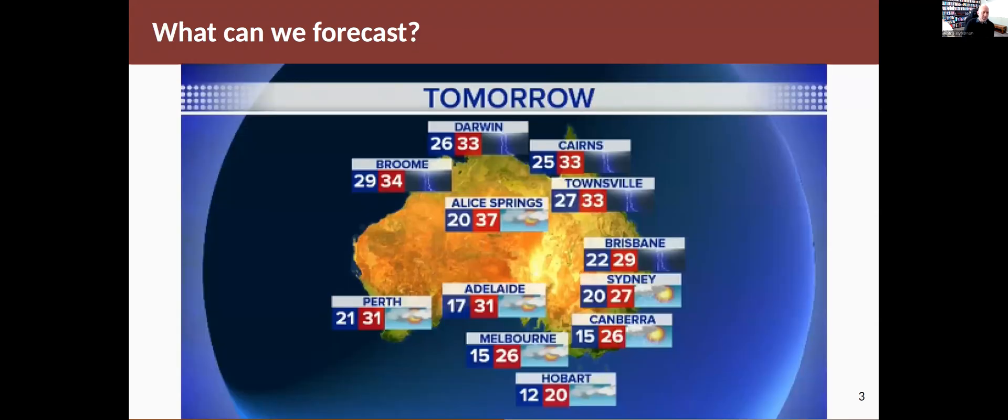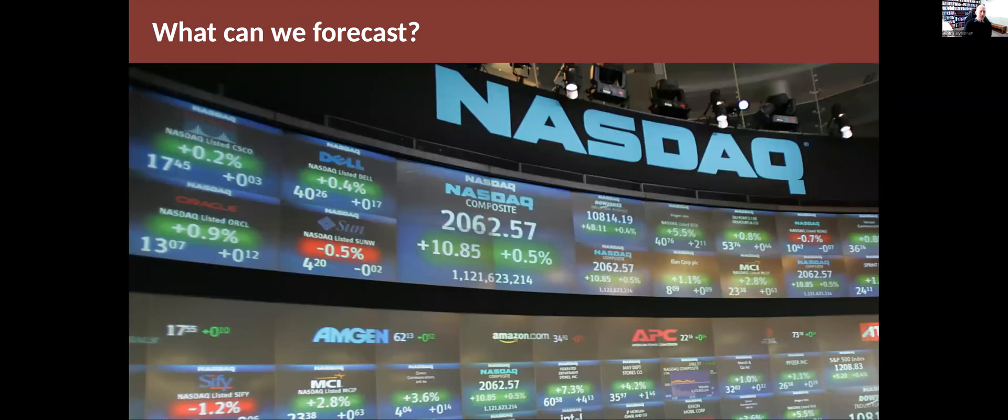One of the most common forecasts that everyone is familiar with is the weather forecast, where people try to predict what's going to happen to temperature or rainfall or humidity or other meteorological phenomena in the coming days. People try to predict what's going to happen to the stock market, and so we have forecasts of closing prices on various different types of stocks or forecasts of stock indexes like the Dow Jones index.